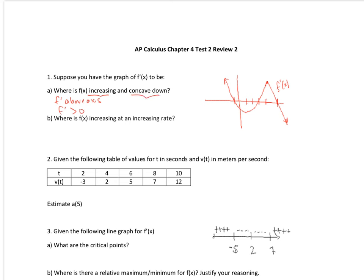For the concave down, we look at the second derivative, and I want f double prime to be less than 0. So in other words, over here, since I'm given a derivative graph, I'm looking for slopes here, and I'm looking for above or below the axes on the increasing and decreasing part.